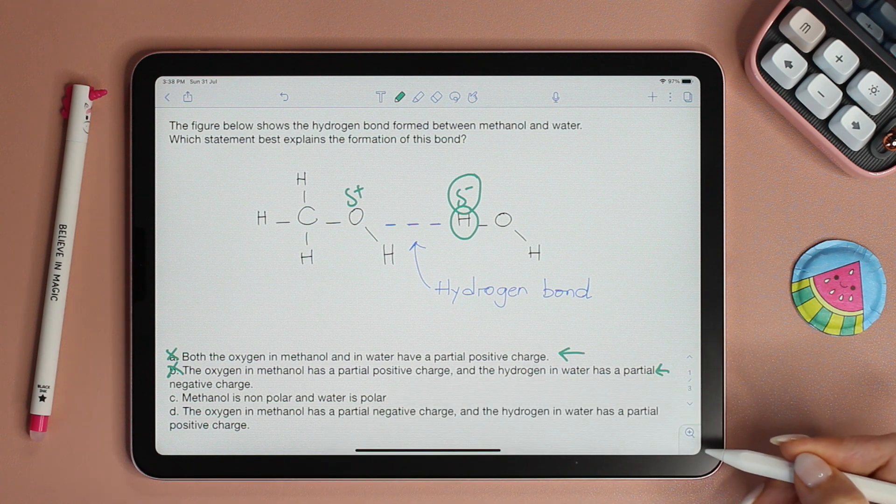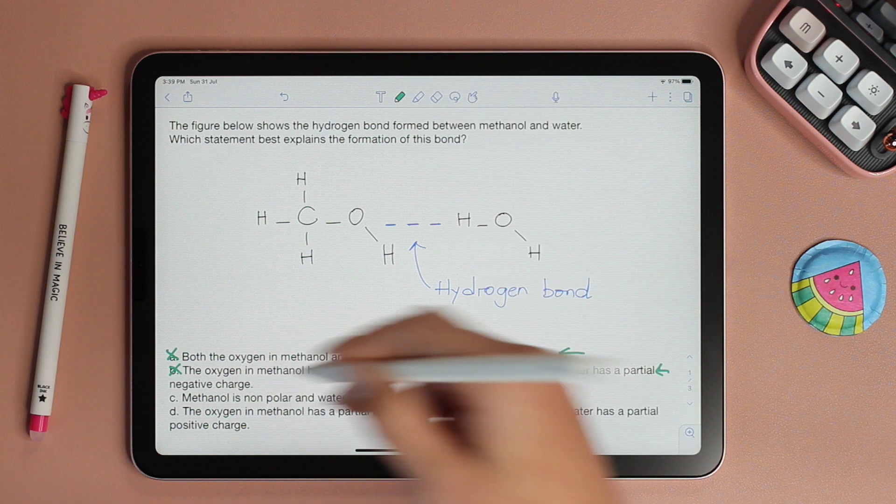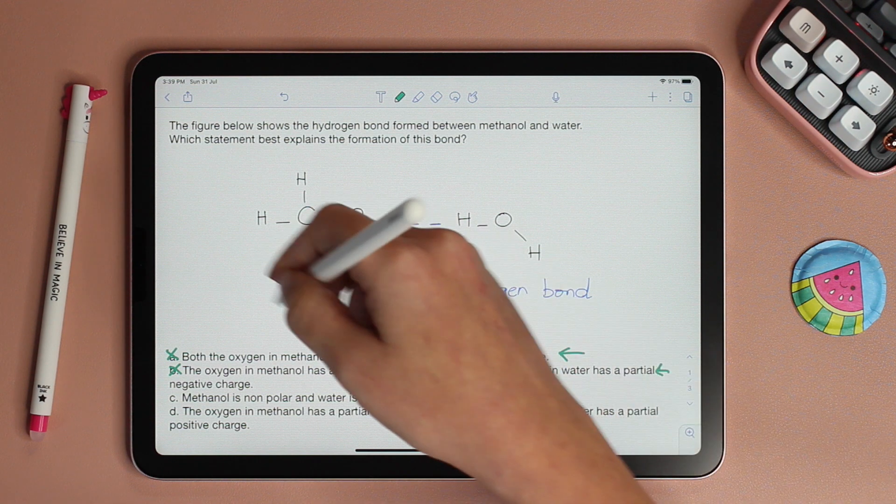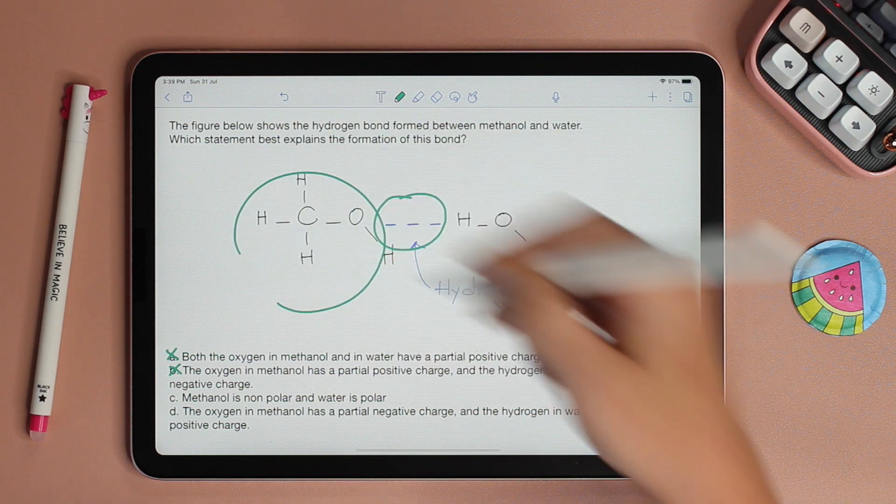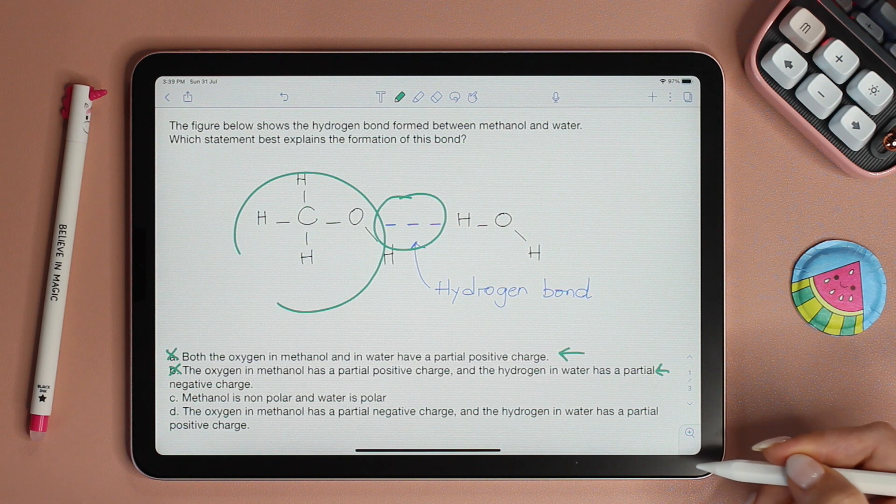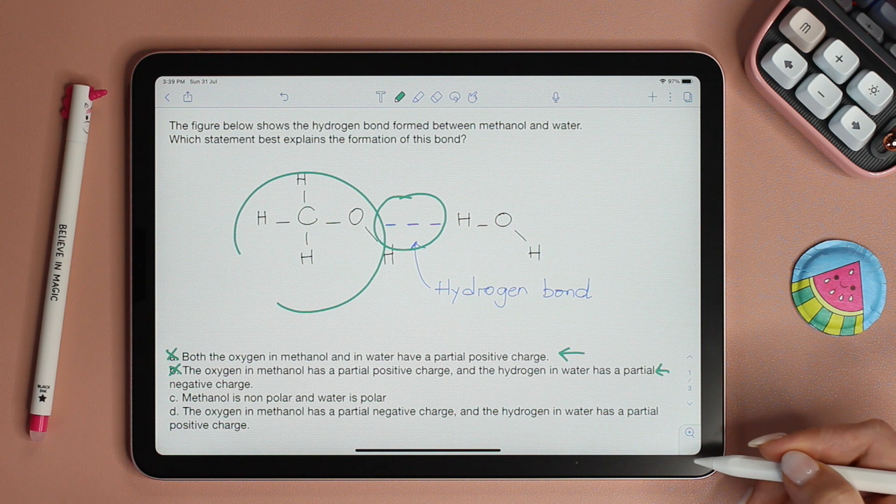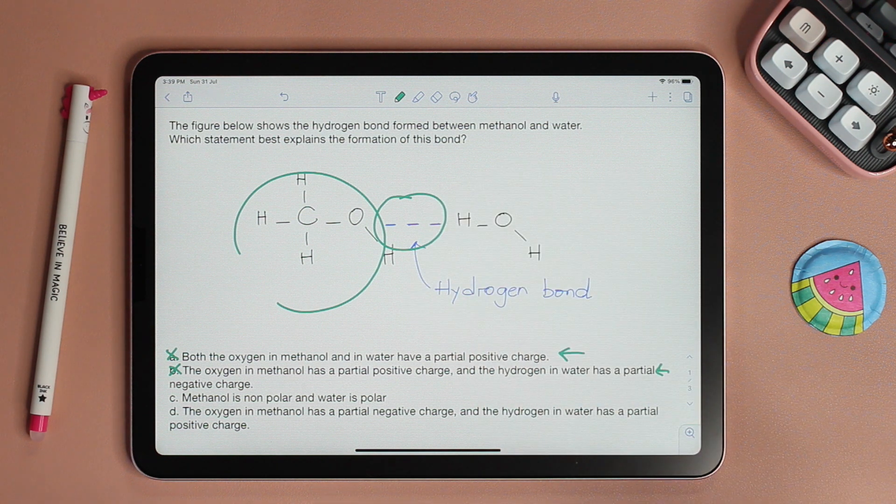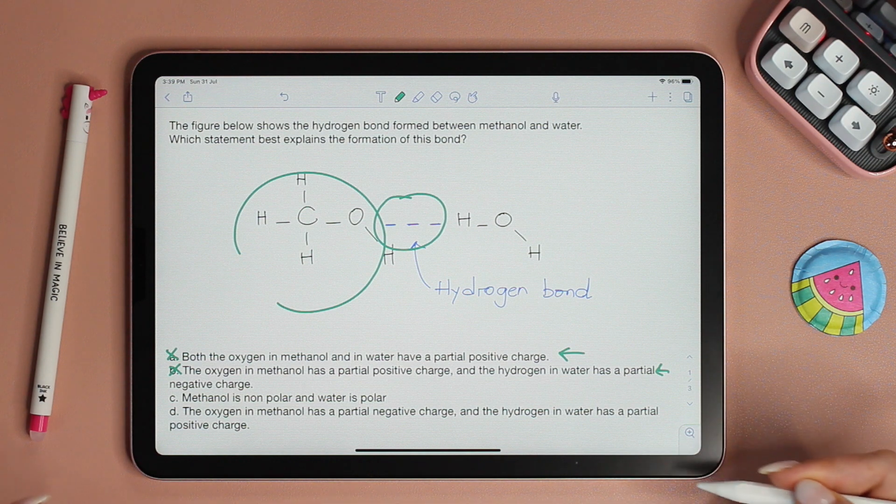Moving along to choice C. Methanol is nonpolar and water is polar. If methanol is nonpolar, then how come there's a hydrogen bond between them? So obviously that's not the answer. And of course, you're not expected to know every single molecule whether or not they're polar. But this is not the choice because we already have a hydrogen bond and we're asked why did the hydrogen bond form.